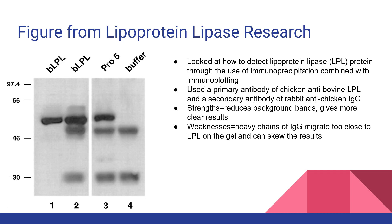However, one of the major weaknesses that this experiment had was that many of the heavy chains of IgG ended up migrating too closely to the LPL on the gel, which may have possibly skewed the results due to either cross-contamination or there being too much of the antibody appearing on the gel than was supposed to.